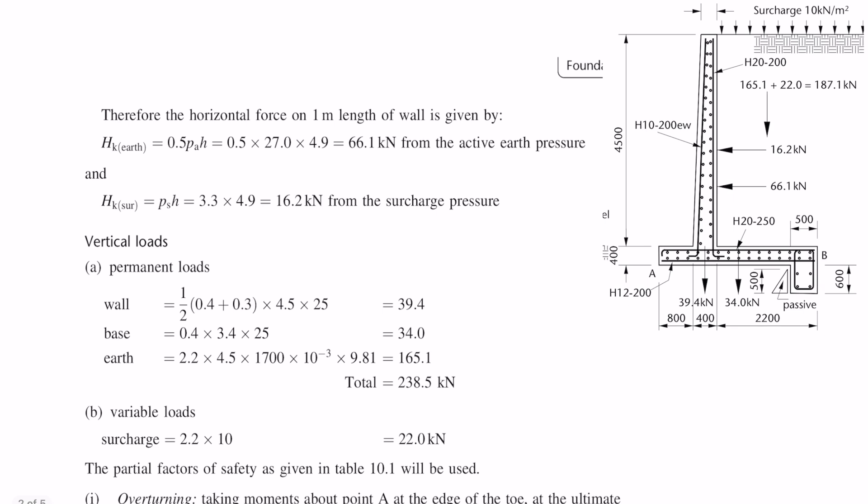Now we can actually work out the horizontal force from the pressures we just calculated. This is over a 1m length of wall so essentially we're trying to work out the force which is the area of the triangle or area of the rectangle. For the earth pressure it's half base times height, so half times the pressure times the height. And the force due to the surcharge is just base times height.